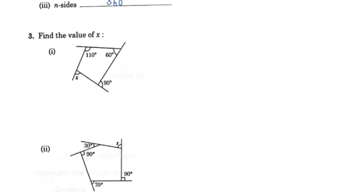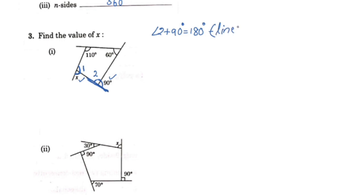Find the value of x. We have exterior angles and interior angles given. One interior angle is 90 degrees, so the corresponding exterior angle 2 plus 90 degrees equals 180 degrees, giving angle 2 equal to 90 degrees.